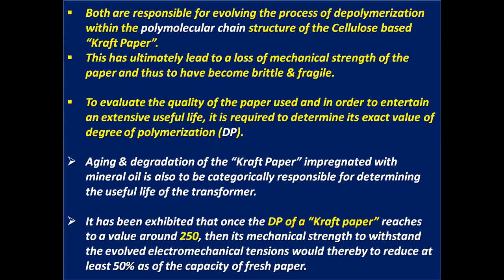Both acid hydrolysis and oxidation are responsible for evolving the process of depolymerization within the polymolecular chain structure of the cellulose-based kraft paper. This ultimately leads to a loss of mechanical strength of the paper, causing it to become brittle and fragile. To evaluate the quality of the paper used and to ensure an extensive useful life, it is required to determine its exact value of degree of polymerization, what is called DP.